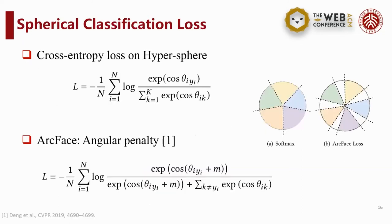To keep pace with the hyperspherical embedding space, we introduce a spherical version of cross-entropy loss. Furthermore, we add an additive angular penalty to enlarge the geodesic distance margin and enforce a node representation to be closer to its target class vector than others.